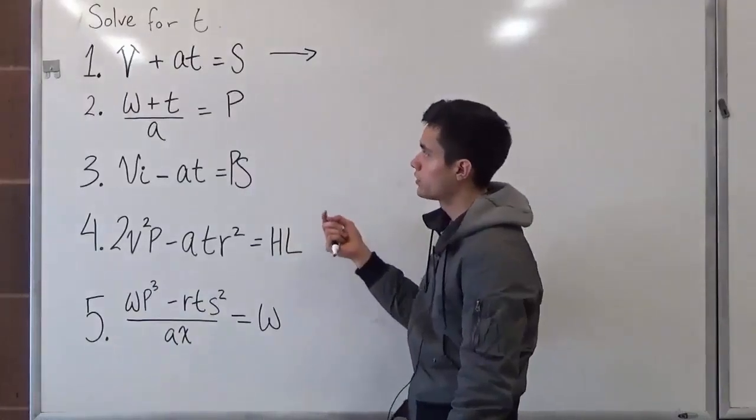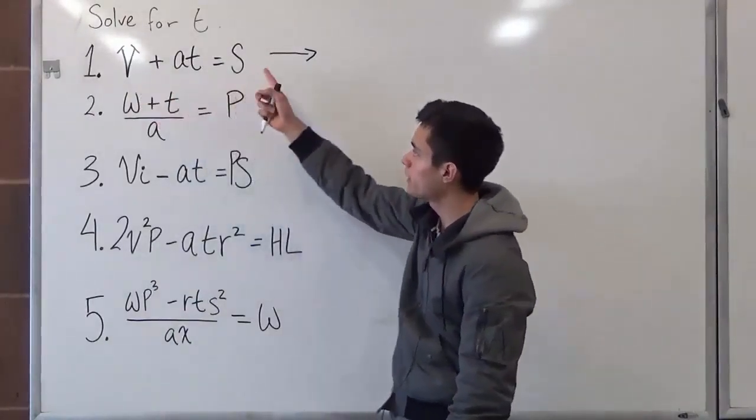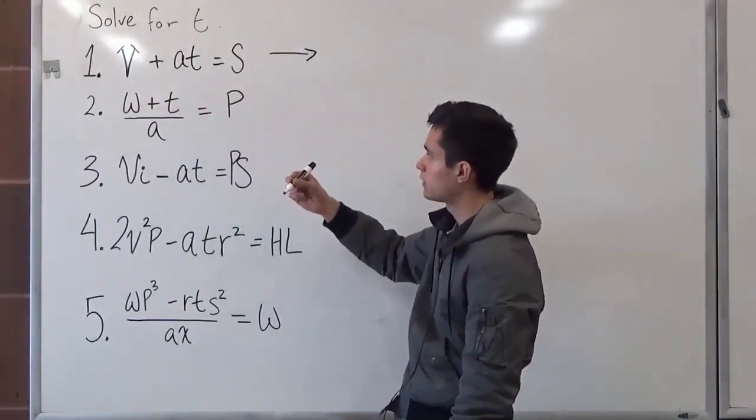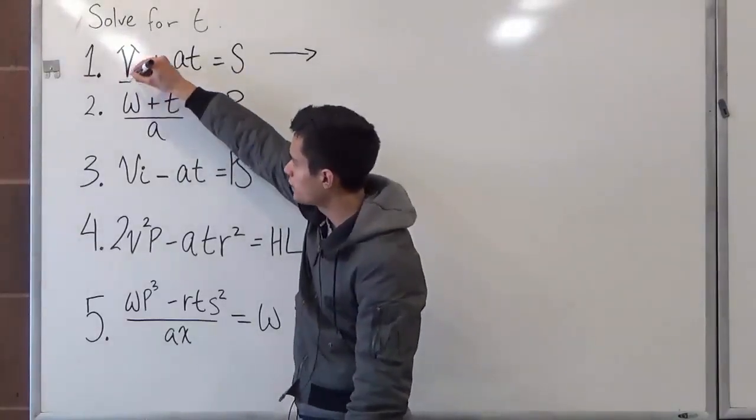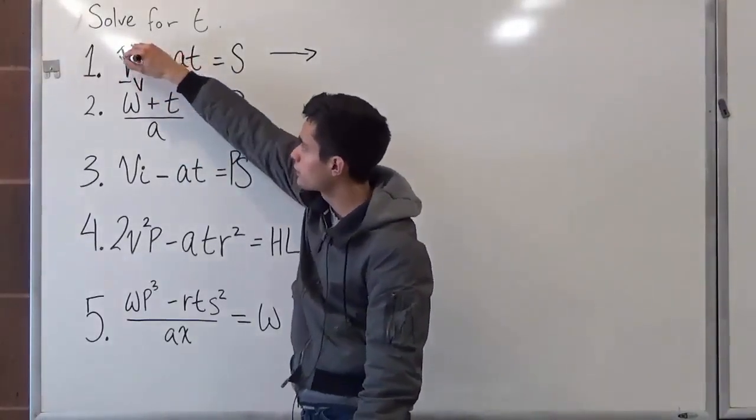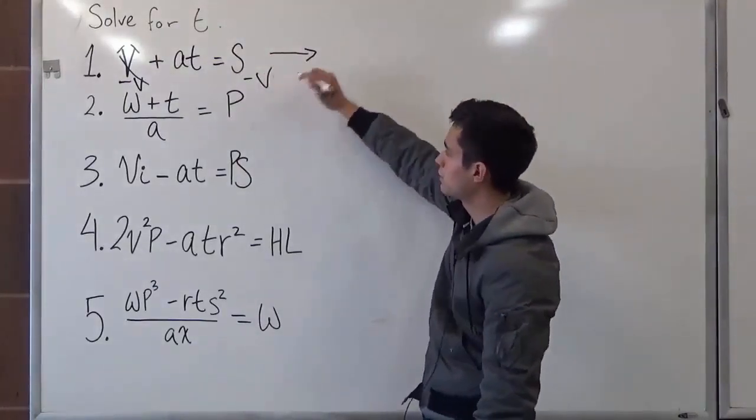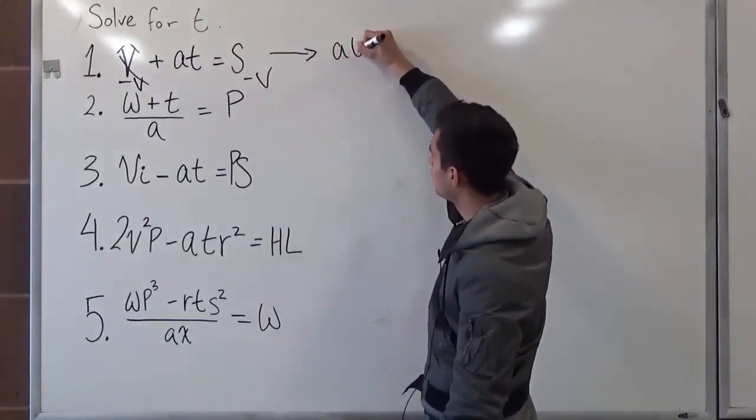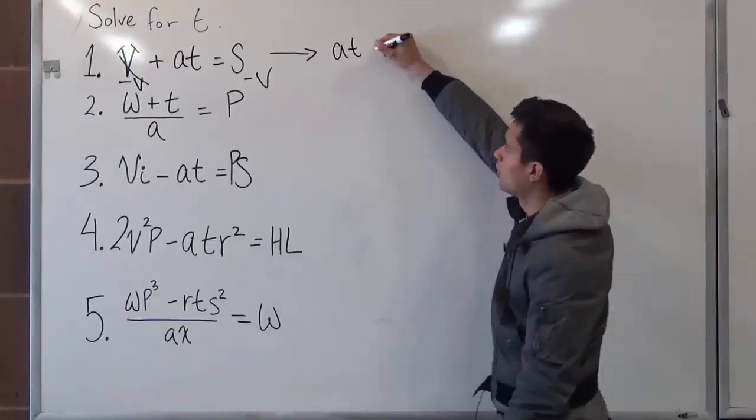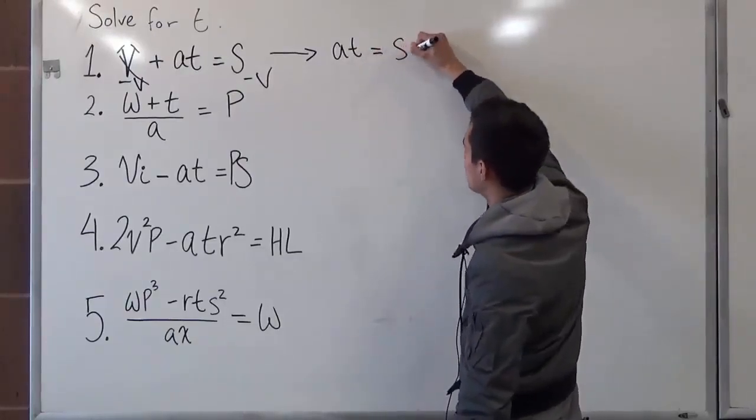What we can do first is move v to the right-hand side by subtracting it. So we can go minus v, and this cancels out minus v. So what this basically means is that at, or a times t, will equal to s minus v.